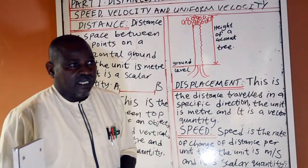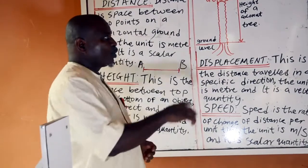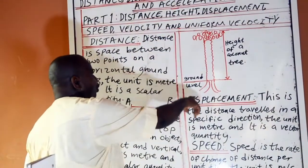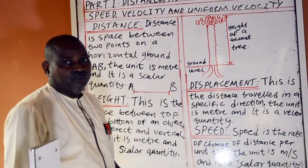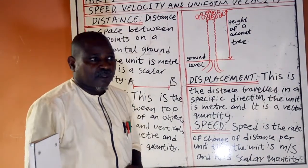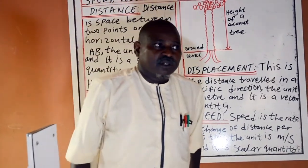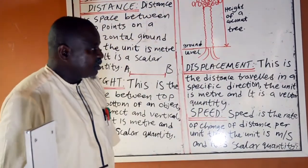Height. Height is space between the top and the top of an object, erect and vertical. The unit is meter and it is a scalar quantity.